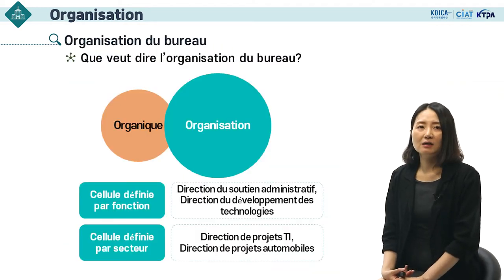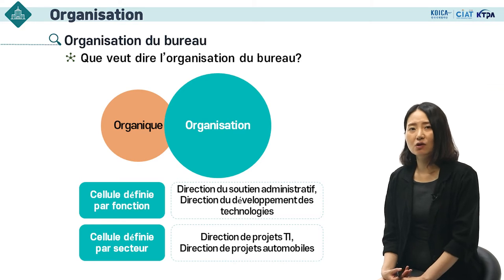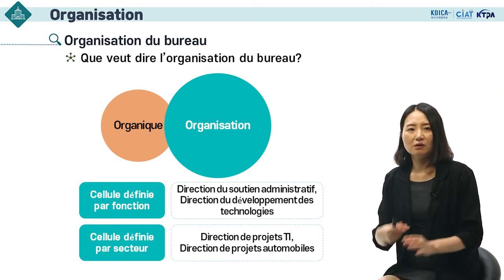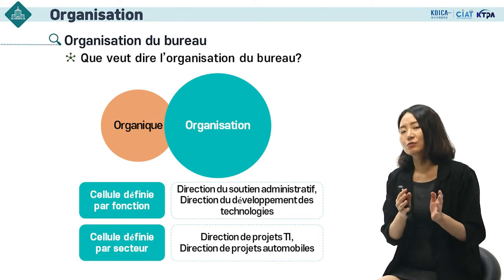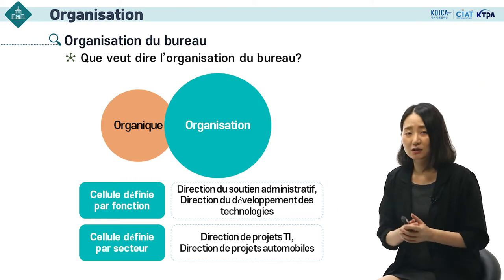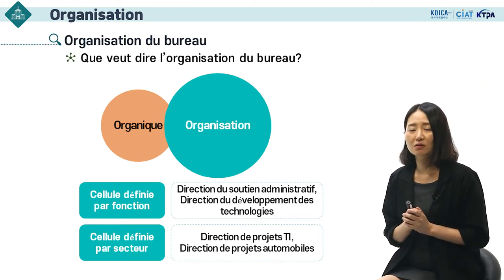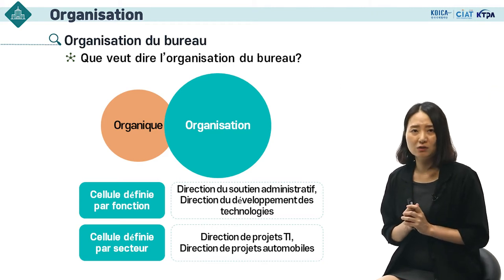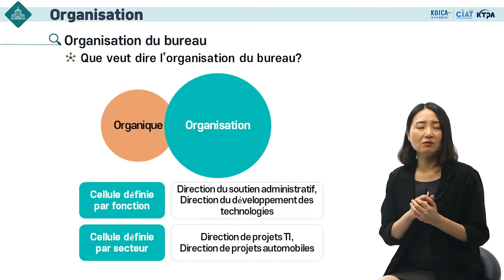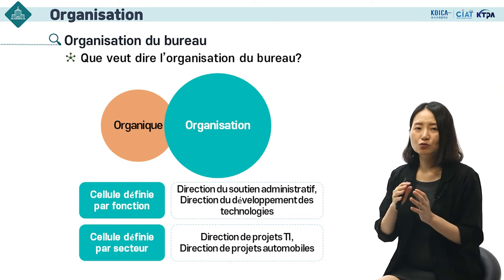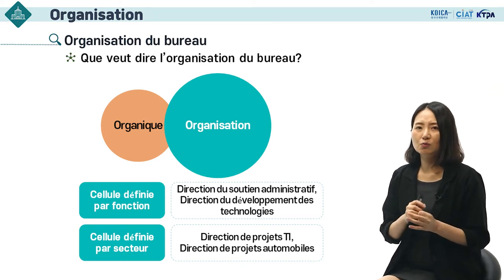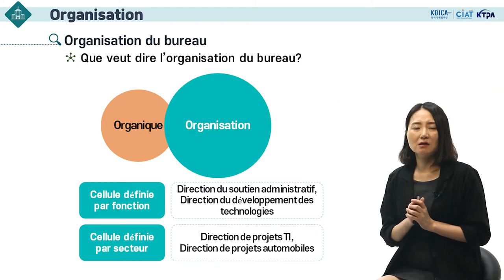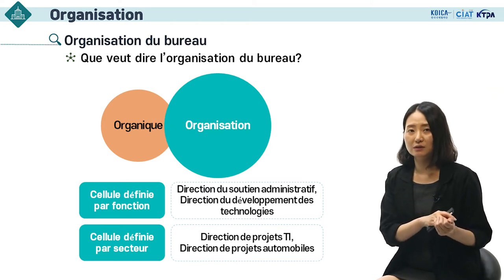Ensuite, c'est l'organisation du bureau. Il y a deux mots : organique et organisation. Ils sont étroitement liés. Une organisation est une forme organique qui répète la naissance, la disparition, l'expansion et la contraction. Un organe du corps humain se compose de cellules, et une organisation est composée de bureaux. Le bureau est la plus petite unité d'une organisation. En général, le bureau des Technoparcs est l'équipe.